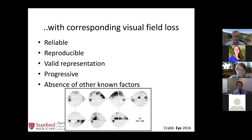The other aspect of glaucoma is that we have to exclude all other causes, including ischemic events or masses that might be causing the optic neuropathy.